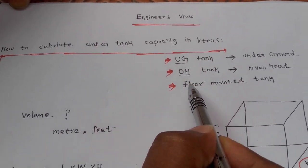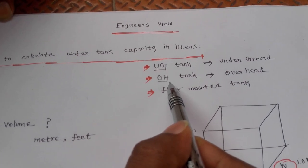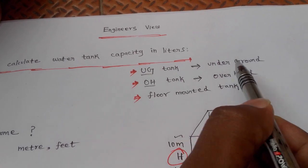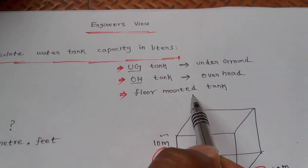There are three types of tank: UG tank, OH tank, and Floor Mounted tank. UG is underground tank, OH is overhead tank, and Floor Mounted tank.